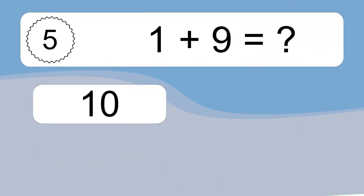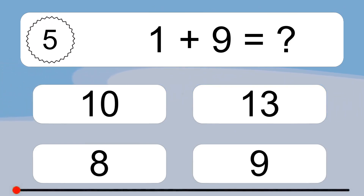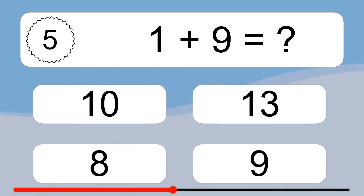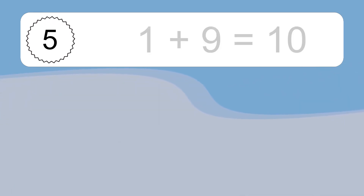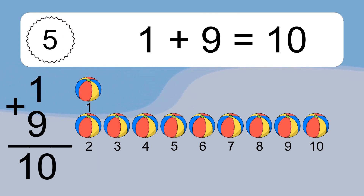1 plus 9 equals what? 1 plus 9 equals 10. Let's count it: 1, 2, 3, 4, 5, 6, 7, 8, 9, 10.